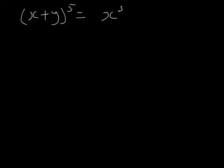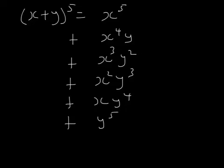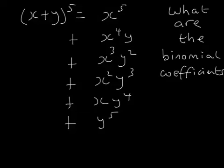So what about x plus y to the power of 5? Well, it's obviously x to the power of 5, and then x to the fourth times y, x cubed times y squared, x squared times y cubed, x times y to the fourth, and y to the power of 5. Every term is going to look like that. But there's going to be a number in front of these terms — that number is called the binomial coefficient. Just check that you understand how the powers of x are decreasing and the powers of y are increasing, and in every case the powers add up to the original power.